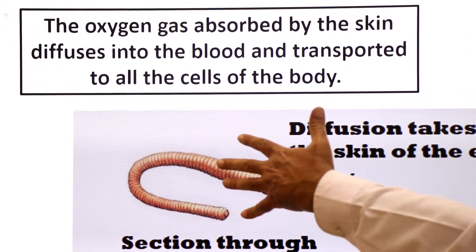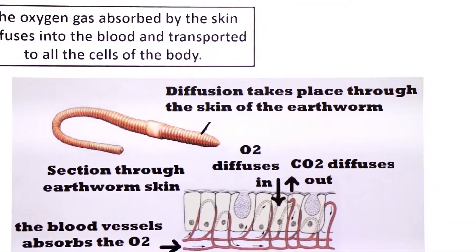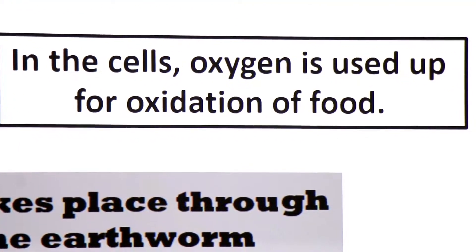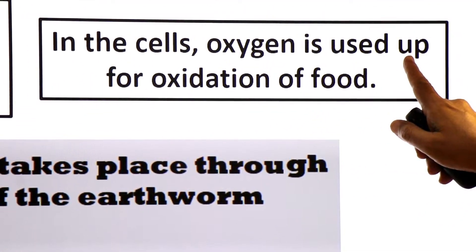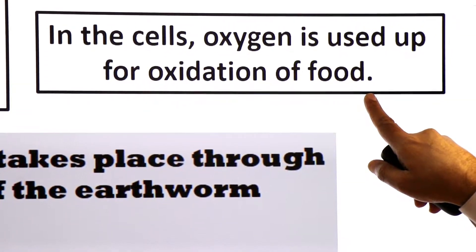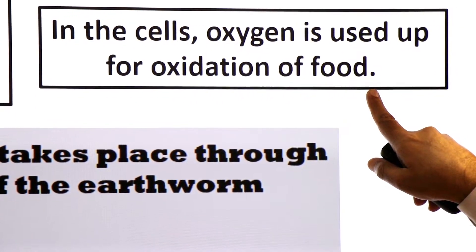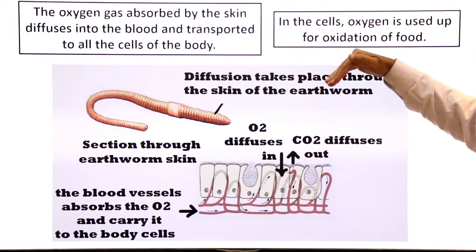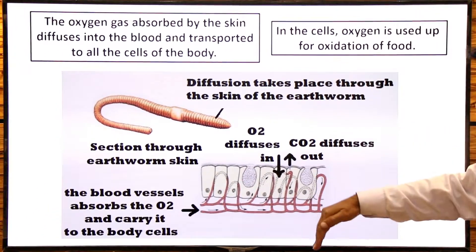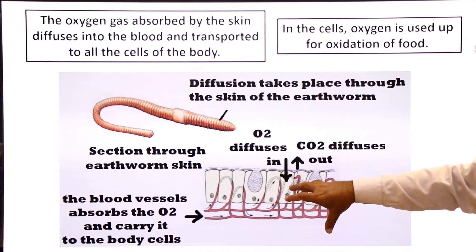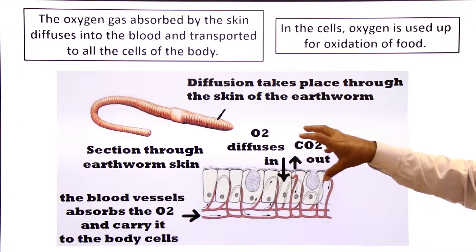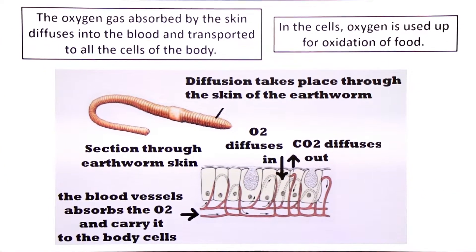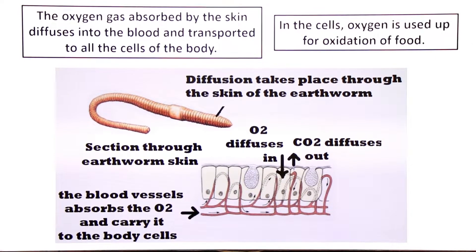Jaise blood earthworm ke different body cells ko oxygen pohunchata hai, phir cells mein cellular respiration hogi. In the cells, oxygen is used up for oxidation of food by a process called cellular respiration. The blood of the earthworm carries oxygen to all cells of the body where oxidation of food takes place to release energy.